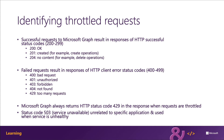Keep in mind, Microsoft Graph is a proxy service to multiple backend services. These include Azure Active Directory for users and groups, Exchange for calendar, contacts, and messages, OneDrive, OneNote, SharePoint, Microsoft Teams, and many more. Each of these services has their own rules and calculations for when limits are exceeded and future requests will be throttled.